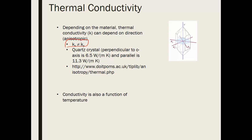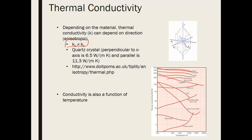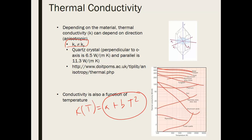Thermal conductivity can also be a function of temperature. For many materials it remains fairly flat, making a constant-conductivity assumption reasonable. But for materials like fused quartz, there is a dramatic change with temperature. One approach is to define a functional relationship, such as k(T) = a + bT², and substitute it into the heat equation, integrating with respect to temperature when solving.